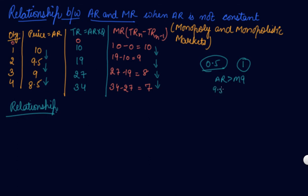The declining rate of MR is faster than AR, so your AR is greater than your MR. Your AR was 9.5 and MR is 9; AR was 9 and MR is 8; AR was 8.5 and MR was 7. So AR is greater than MR — that is the second relationship.